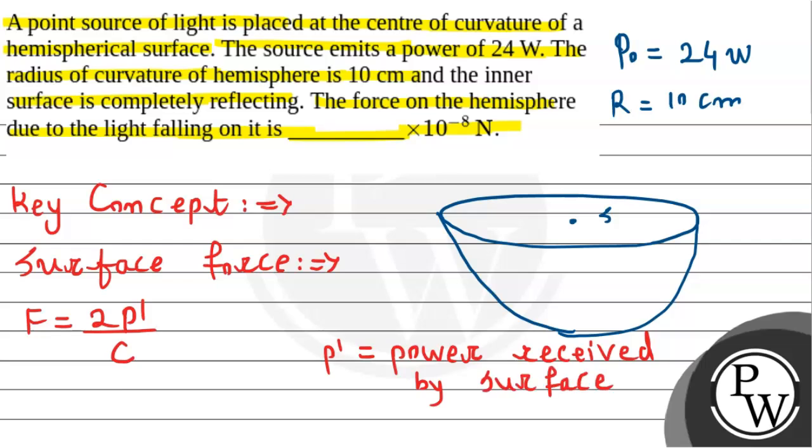We remember the formula for power: P = intensity × area. Using this concept, for a hemispherical surface, the area is πR², and the surface area is 4πR².